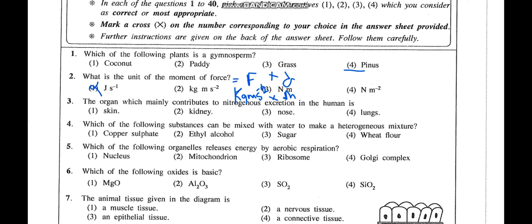Continuing Question 2: The third option, newton meter, is correct — force is newtons and distance is meters. The fourth option, newton per square meter, is pressure (force divided by area), so that is wrong. The correct answer is newton meter. In MCQs, always eliminate the wrong answers first and the correct answer will remain — that is the trick to follow.